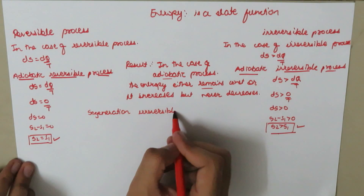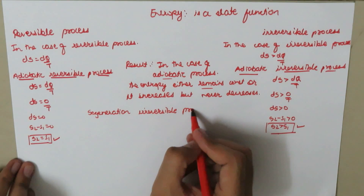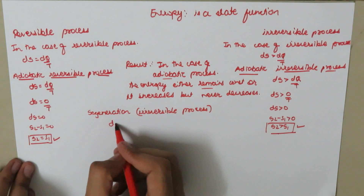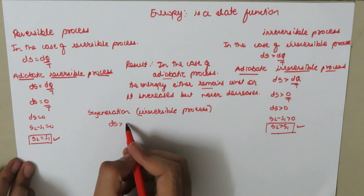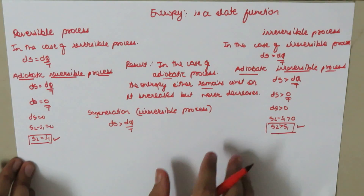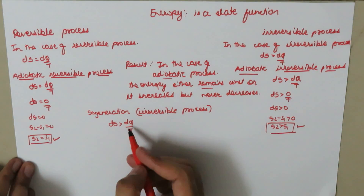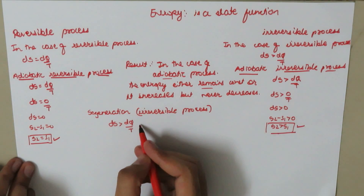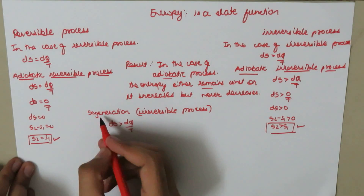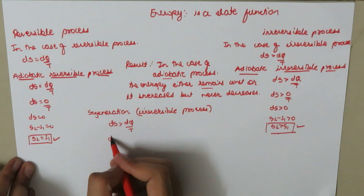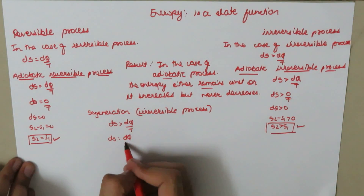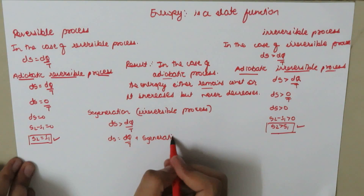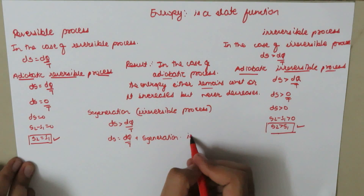Now we are going to learn the concept of entropy of generation, which is mainly for irreversible processes. We know that for the irreversible process dS should be greater than dQ over T. To define by how much the entropy is greater, we add a term called entropy of generation. So dS is equal to dQ over T plus the entropy of generation, and this is for the irreversible process.